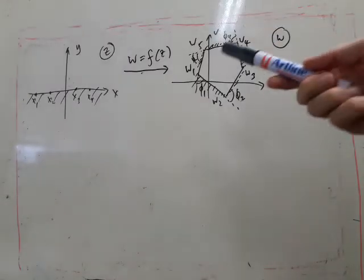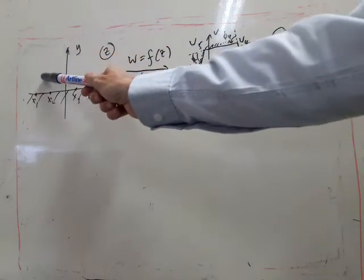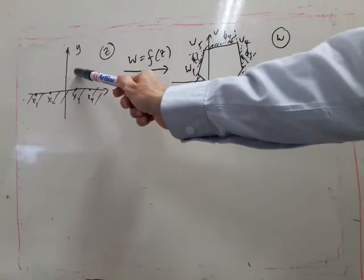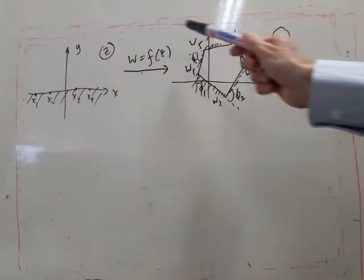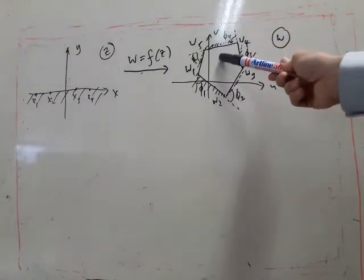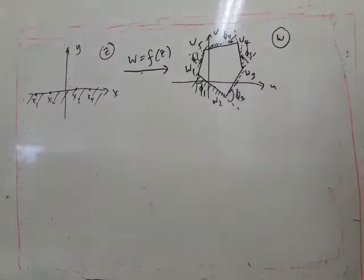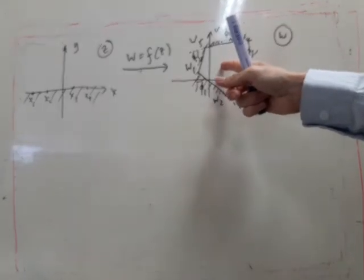The Schwarz-Christoffel transformation takes the upper half of the z-plane and maps it to the interior of a polygon in the w-plane. Now when we say polygon, it's actually possible for this polygon to be what's called an open polygon.